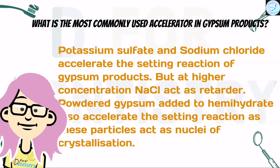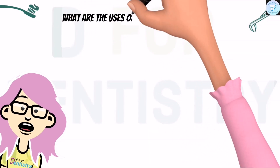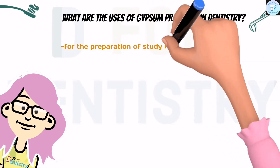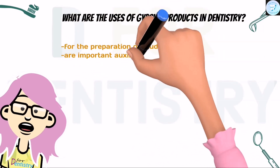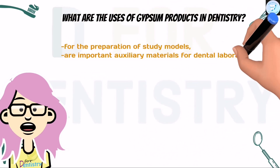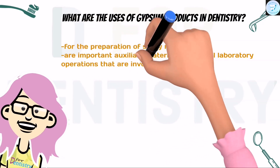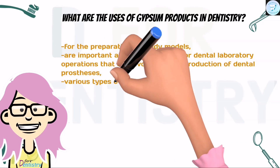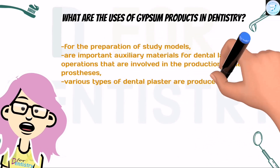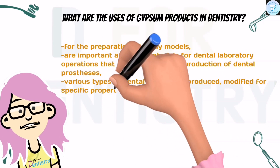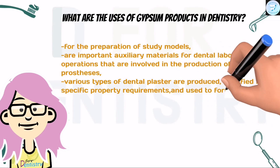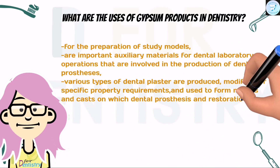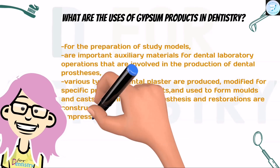What are the uses of gypsum products in the industry? First, for the preparation of study models. They are important auxiliary materials for dental laboratory operations involved in the production of dental prostheses. Various types of dental plasters are produced, modified for specific property requirements, and used to form molds and casts on which dental prostheses and restorations are constructed.